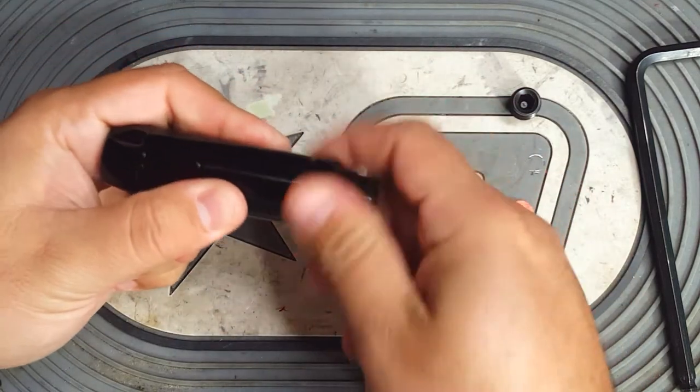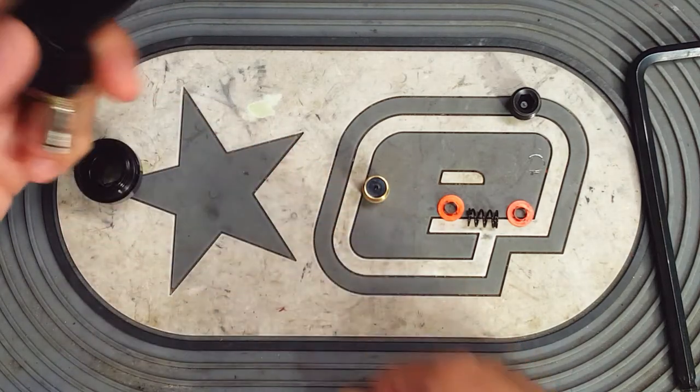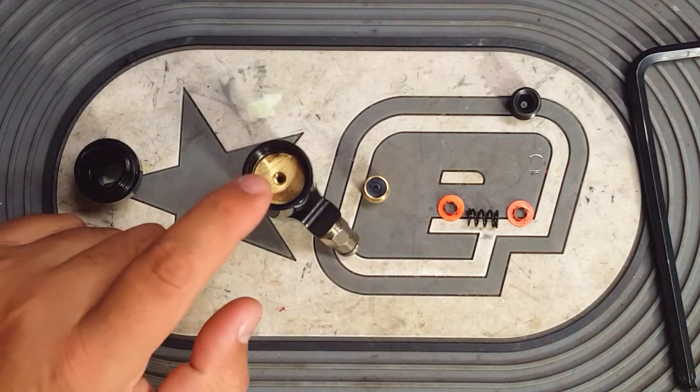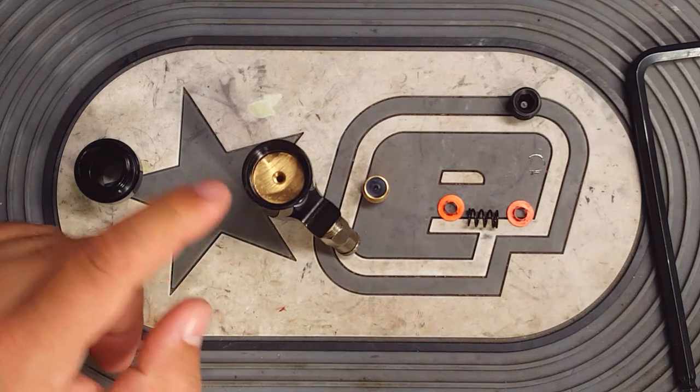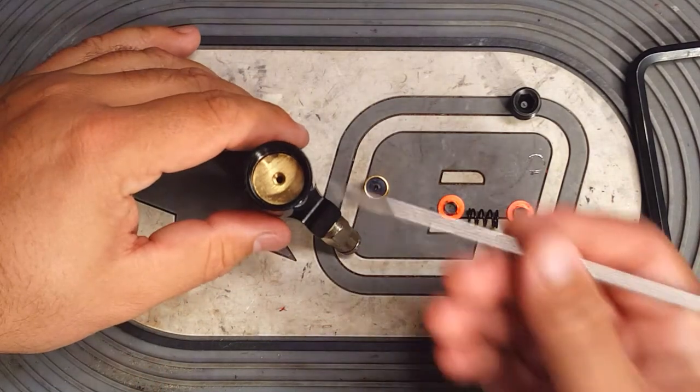Unscrew the top cap here and then to pull the piston out, the top of the piston is actually threaded for 10-32 which you can use your cocking rod to thread in and pull the piston out.